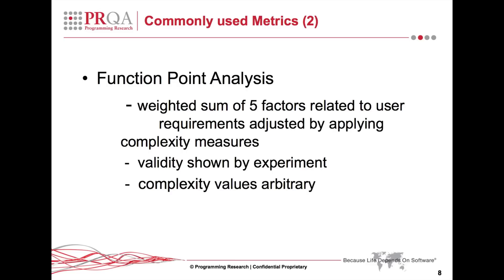A more complex alternative to lines of code is function point analysis, defined by Albrecht. This is another size metric, but uses the sum of five factors relating to user requirements: inputs, outputs, logic files, inquiries and interfaces. This sum is then adjusted by applying complexity measures. The method is widely used and has been shown by experiment to be a valid measurement. Function points are an early indicator of rising or excessive complexity in the software lifecycle, yielding a more timely corrective action. However, care should be taken as the complexity factors are arbitrary, subjective, based on the developer's judgment, and there is no empirical evidence to indicate which values should be used.